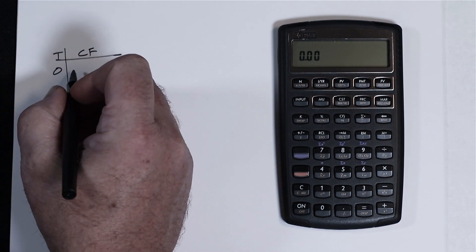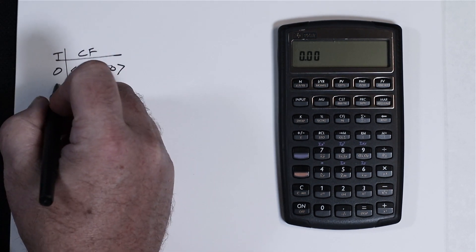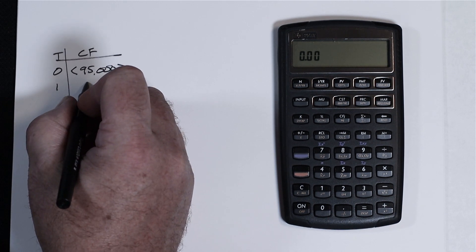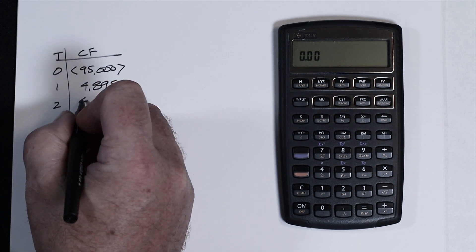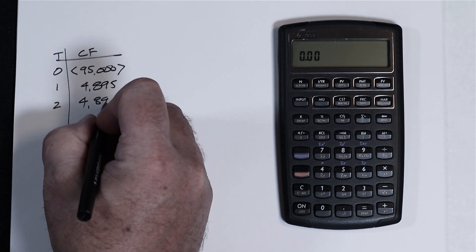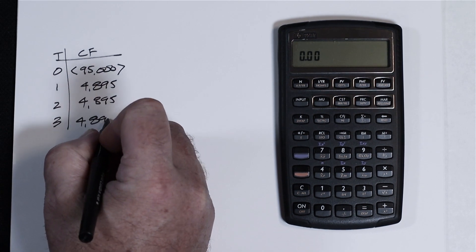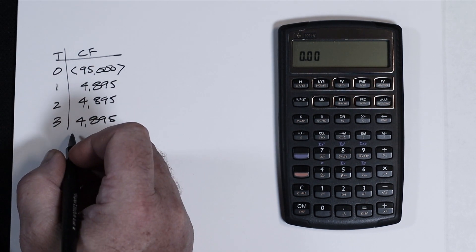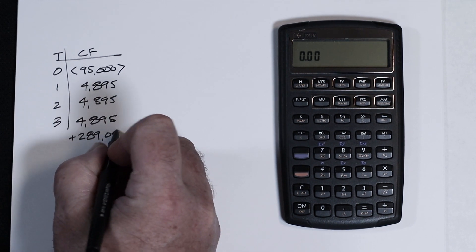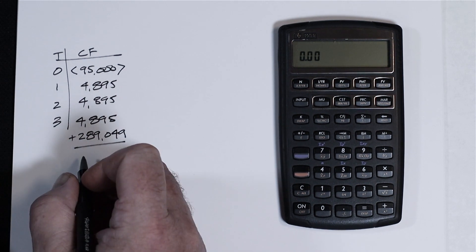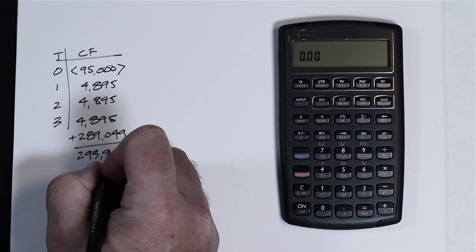At time zero, you're going to pay out $95,000. At time one, you'll receive in $4,895. At time two, receive in $4,895. And at time three, receive in $4,895 plus $289,049 for a sum of $293,944.